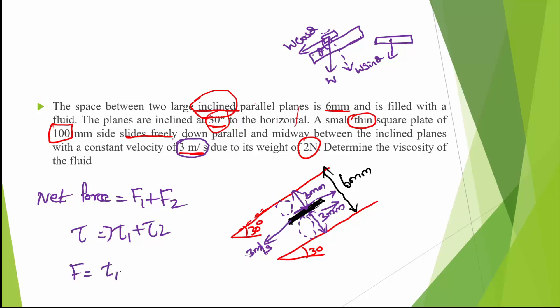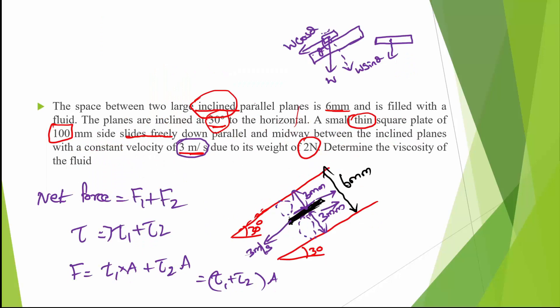According to Newton's law of viscosity, shear stress τ = μ × (du/dy). We need to find the viscosity μ. The net force acting comes from the weight of the plate. Drawing the diagram, the inclined plane makes 30 degrees with the horizontal.